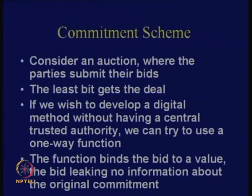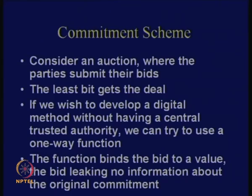If we wish to develop a digital method without having a central trusted authority, we would try to use a one-way function. The idea of using a one-way function is that if you are committing to a bid value, then you cannot change that bid value. All of you give the bid values through a one-way function, like maybe a hash function. Hash functions by definition have this one-wayness. So you can just take a value, hash it, and give the result. Your problem lies if you want to do malice — to change the original value keeping the hash value the same — and that is against the collision resistance of the hash function.